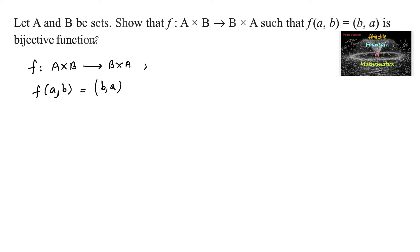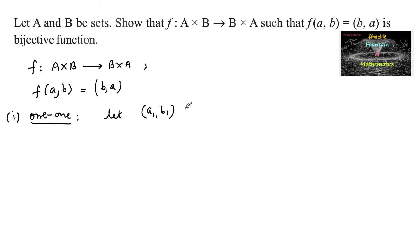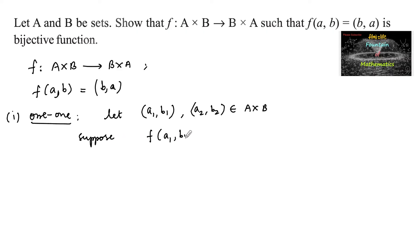To prove that this function is bijective, let us check first for one-to-one. Let us consider (a1, b1) and (a2, b2) belonging to A cross B, and suppose that f of (a1, b1) is equal to f of (a2, b2).